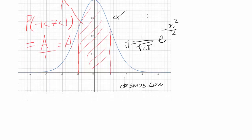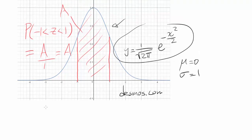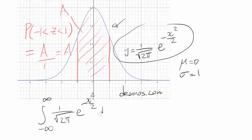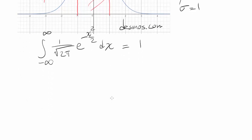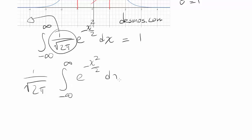The standard normal distribution is represented by y equals 1 over the square root of 2π times e to the negative x squared over 2, because it is a normal distribution with mean 0 and standard deviation 1. We wish to prove that the integral from negative infinity to positive infinity of this curve — 1 over the square root of 2π times e to the negative x squared over 2 dx — equals 1. We can pull 1 over the square root of 2π outside the integral, since it's a constant, leaving the integral of e to the negative x squared over 2 dx equal to 1.